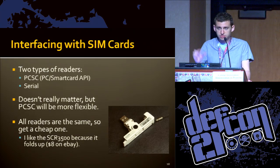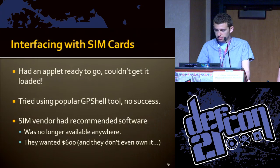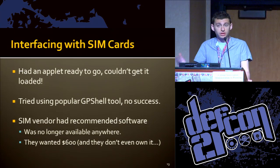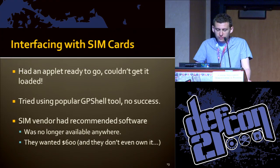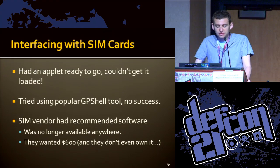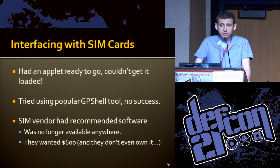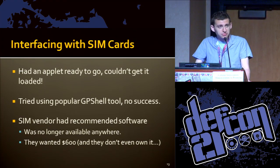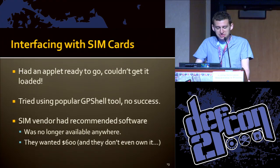At this point we had written some horrible looking code, compiled it, and converted it to a cap file — but we couldn't get it to load. We found a lot of references to a tool called GP Shell (Global Platform Shell) — couldn't get that to work. Our SIM vendor was asked what software they use; they sent us a screenshot of a simple app, but when we asked for it, they said no. Eventually they offered us, for six hundred dollars, a program they didn't write and don't own the copyright to — so we decided not to do that.